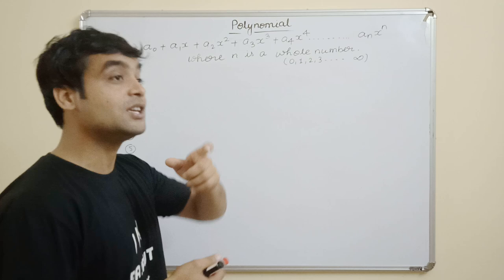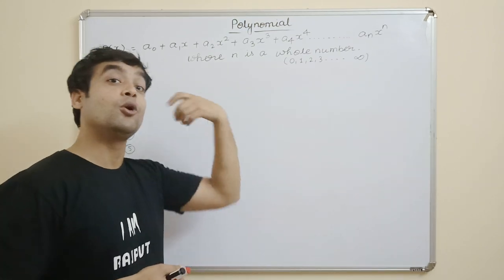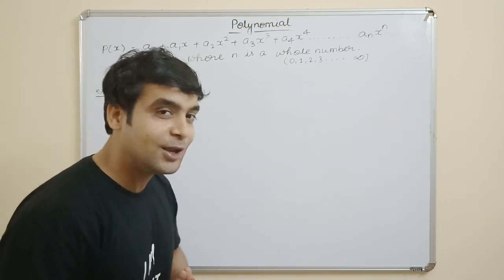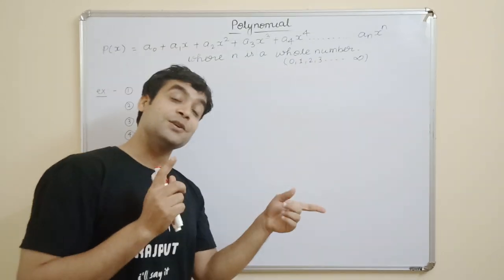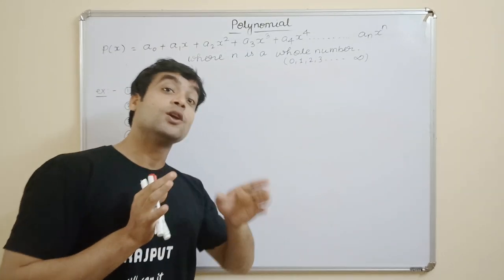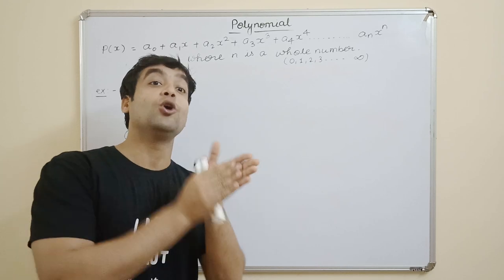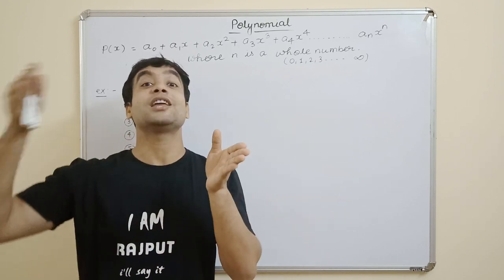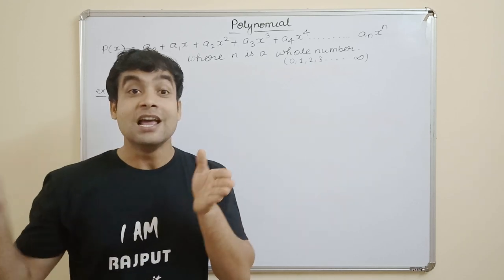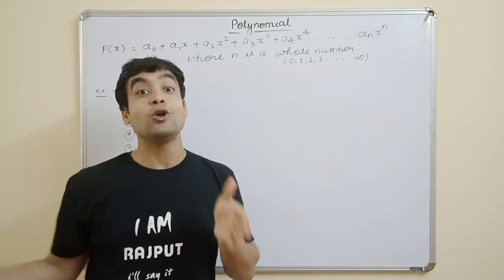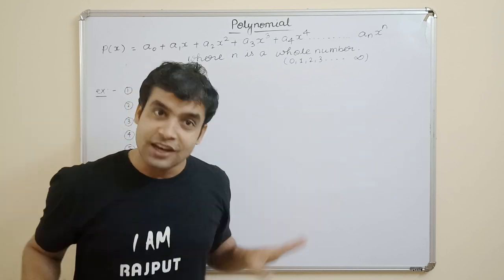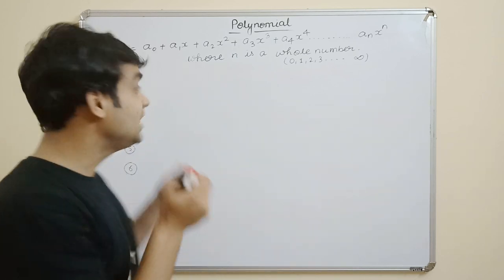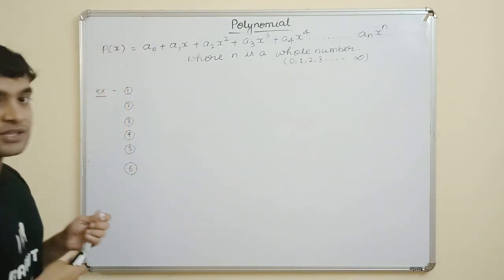We have studied algebraic equations because every polynomial is an algebraic equation. But not every algebraic equation is necessarily a polynomial. Let's look at examples to understand this distinction.